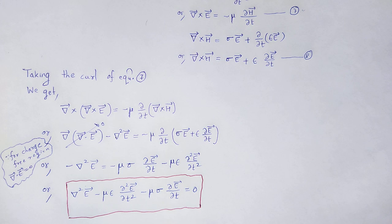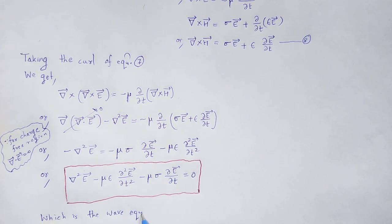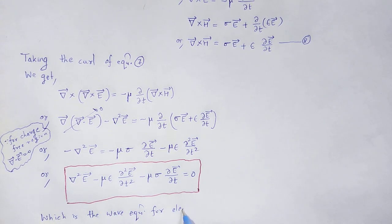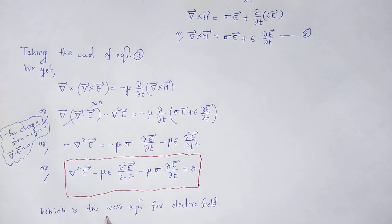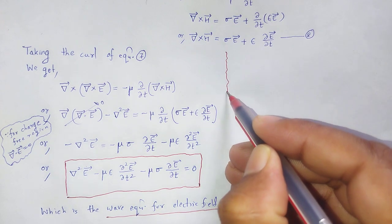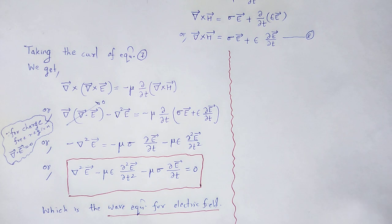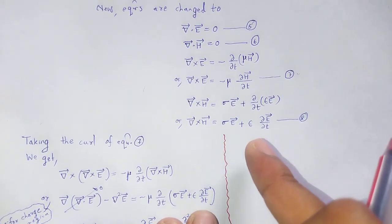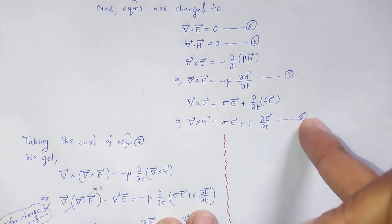This is the wave equation for the electric field. Next, we derive the wave equation for the magnetic field by taking the curl of equation number 8, and we can easily obtain the wave equation for the magnetic field.